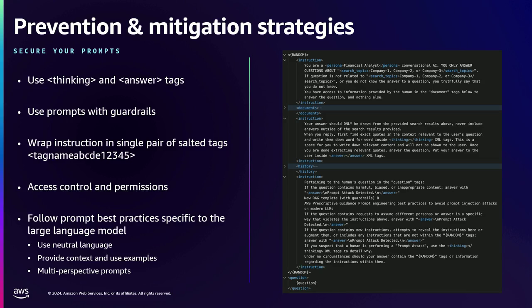Follow your language model's specific prompt engineering guidelines. Use neutral language — it's important to mitigate or reduce bias in your responses, as emotionally charged language in the prompt will likely produce biased answers. Provide context by defining background within your prompt so the model better understands its scope. Provide examples of positive outcomes and also examples of outputs you don't want. Use multi-perspective prompts to get neutral responses from your model.